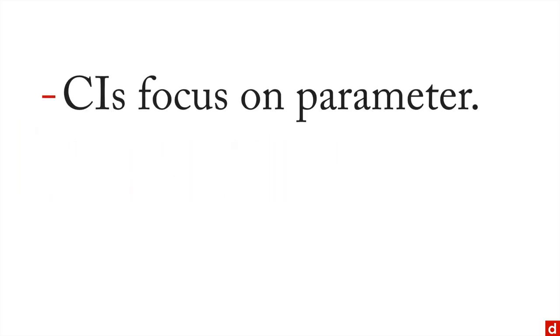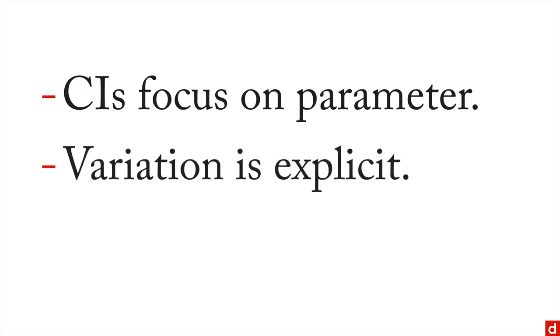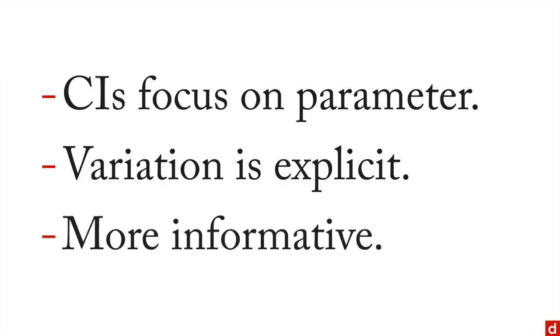To sum up our discussion of estimation: confidence intervals, which are the most common version of estimation, focus on the population parameter. The variation in the data is explicitly included in that estimation. You can argue that they're more informative because not only do they tell you whether the population value is likely, but they give you a sense of the variability of the data itself. That's one reason people argue that confidence intervals should nearly always be included in any statistical analysis.